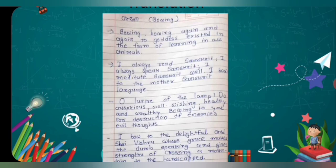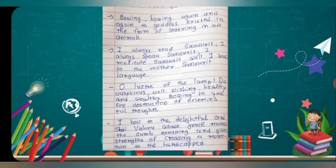Third line: O destroyer of enemies, do auspicious well wishes, health and wealth — bowing to you for the destruction of enemies' evil thoughts. Fourth line: I bow to the delightful God Shri Vishnu, whose grace makes the dumb speak and gives the strength of crossing a mountain to the handicapped.